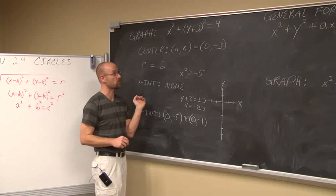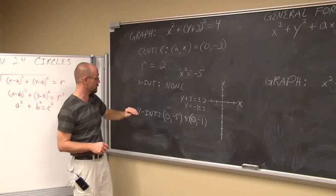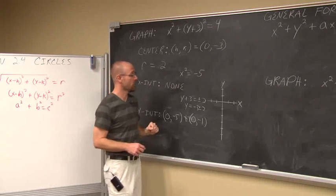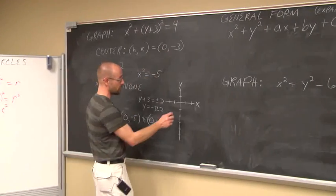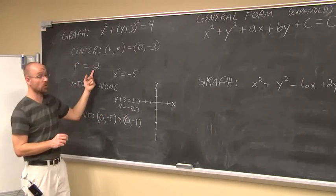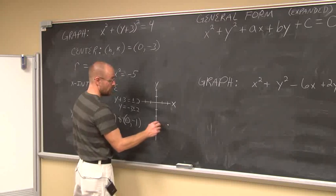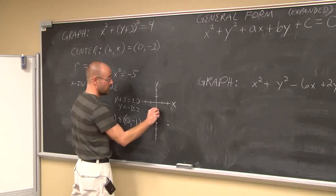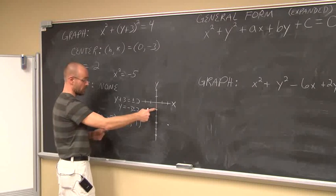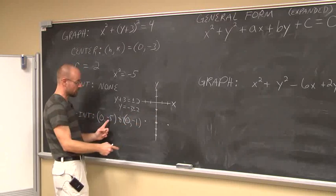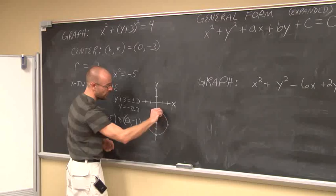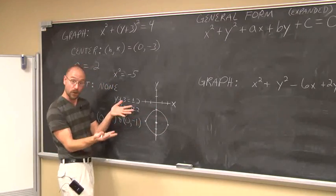Two y-intercepts, no x-intercepts. With all this information — the center, the radius, and any intercepts — I can graph it. The center is at 0, negative 3. From the center I can go 2 units in any direction: 2 to the right, 2 to the left, 2 up, and 2 down. The y-intercepts at 0, negative 1 and 0, negative 5 are 2 up and 2 down from the center. With those four points, I can draw the circle — and even freehand, it looks relatively circle-ish.